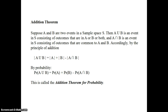Assume there are two events A and B in a sample space consisting of all possible outcomes of A and B. Then A union B is an event consisting of outcomes in A and B as well as outcomes common to both. So the probability of A union B equals probability of A plus probability of B minus probability of A intersection B.